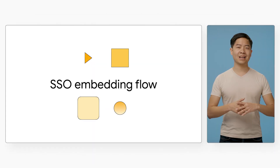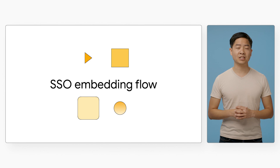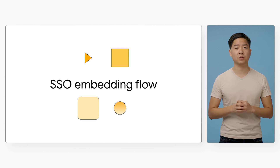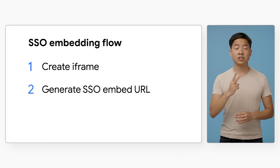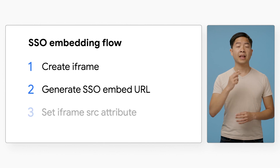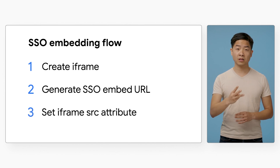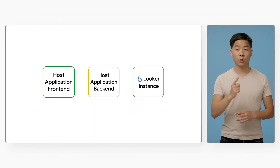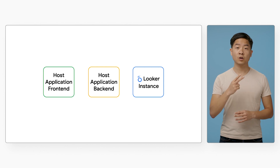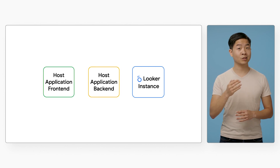Now let's walk through the SSO embedding flow. We want your host application to securely embed your Looker content in an iframe for each of your users. Your host application will create an iframe, generate the SSO embed URL for your user, and set the URL on the iframe's source attribute. We'll walk through a high-level architectural example, focusing on three parts: your host application frontend, your host application backend, and your Looker instance.